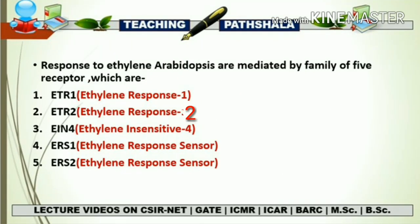Apart from ETR1, a few more receptors have been identified in Arabidopsis that play an important role in the Ethylene signaling pathway. These receptors are: ETR1 (Ethylene Response 1), ETR2 (Ethylene Response 2), EIN4 (Ethylene Insensitive 4), ERS1 (Ethylene Response Sensor 1), and ERS2 (Ethylene Response Sensor 2). So apart from ETR1, there are four more receptors present in the Arabidopsis plant.